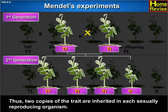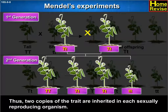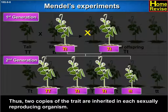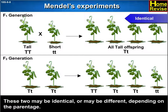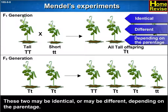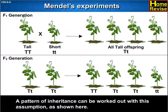Thus, two copies of the traits are inherited in each sexually reproducing organism. These two may be identical or may be different depending on the parentage. A pattern of inheritance can be worked out with this assumption, as shown here.